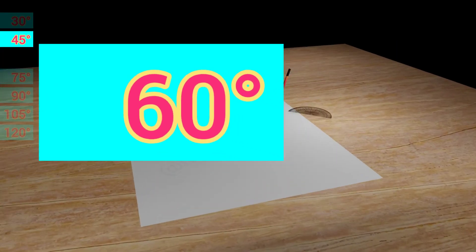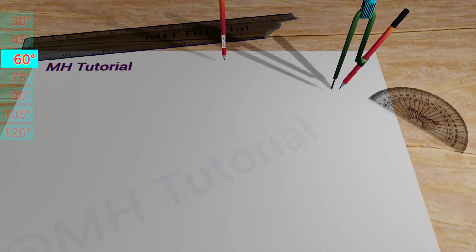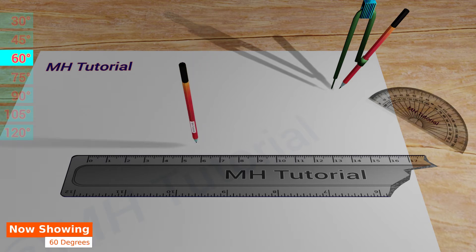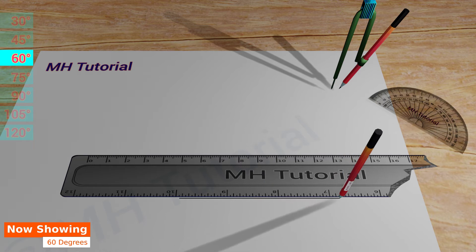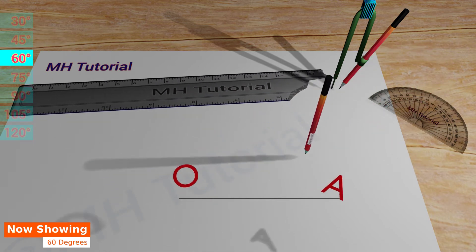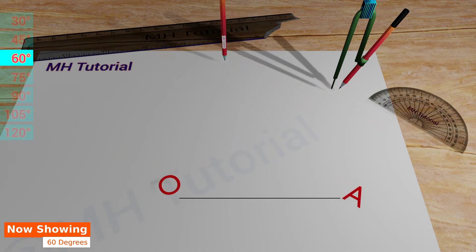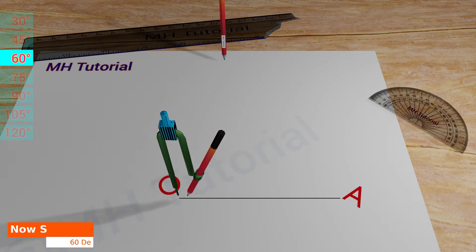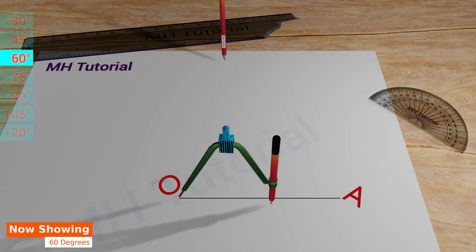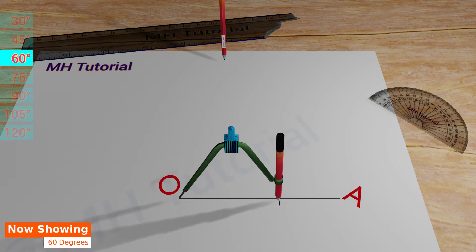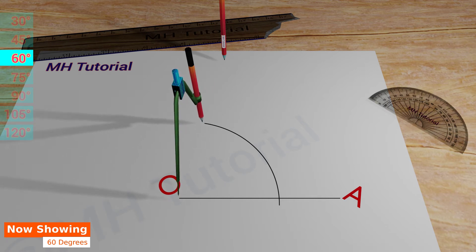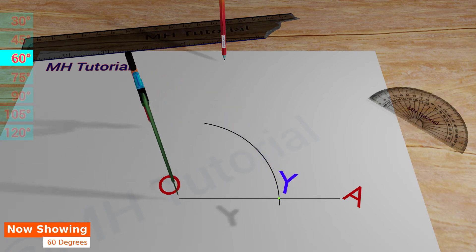For the 60 degree angle. With a scale and a pencil, a straight line is drawn in the middle of the page. The name of this segment is OA. Next, a pencil compass is taken. A circle arc is drawn with its tip placed at the point O. The arc of the circle intersects the straight line at the point Y.